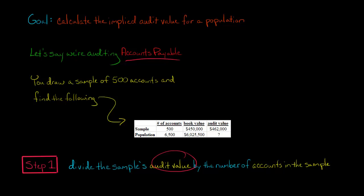So we're going to take $462,000, and we're going to divide it by 500. And that's going to equal $924. And this $924, that is our mean per unit, sometimes abbreviated MPU.